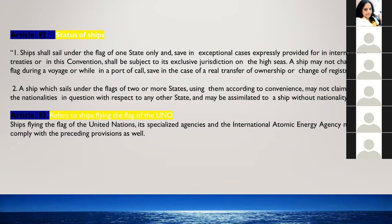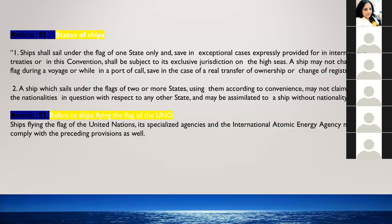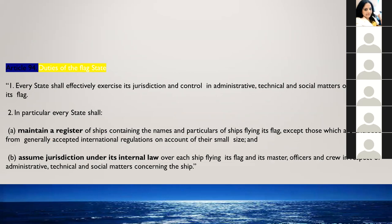Article 93 talks about ships flying the flag of the United Nations Organization. Ships may fly the flag of the UN, its specialized agencies, and the International Atomic Energy Agency. Even these ships must comply with the preceding provisions — the flag should not be changed during a voyage except where ownership or registry has changed.